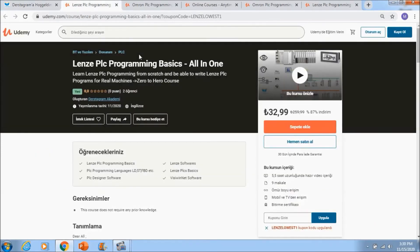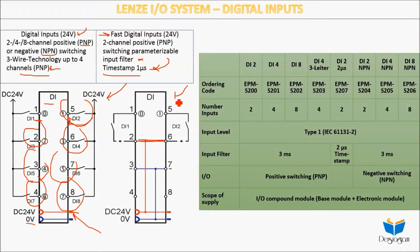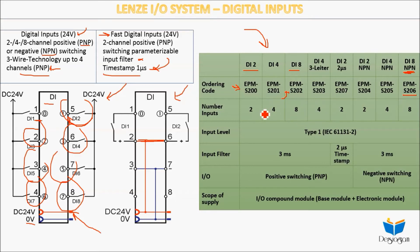The digital input module connection is like this. Here is the selection table: if you need two digital inputs, you need to select the EPM AS-200 module. If you want eight digital inputs with PNP, select the EPM AS-202. If you need eight digital inputs but with NPN input, select the EPM AS-206 module. If you need two-microsecond fast digital input, select the EPM AS-207.